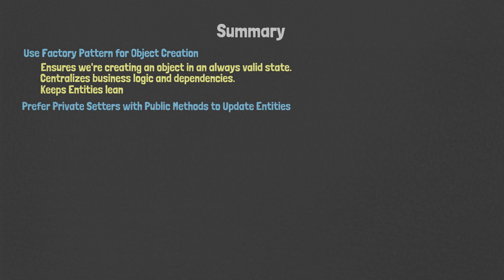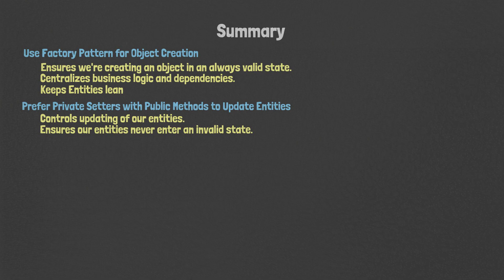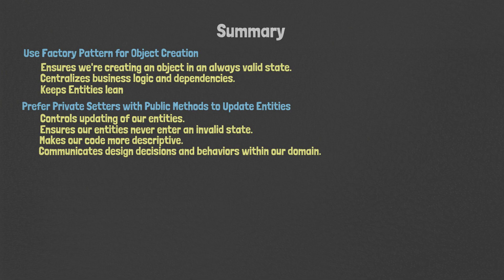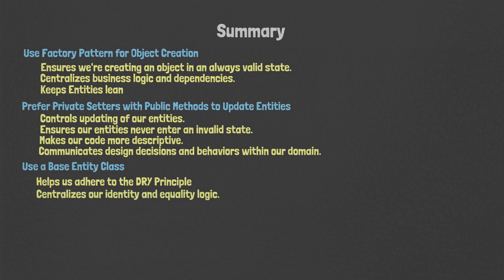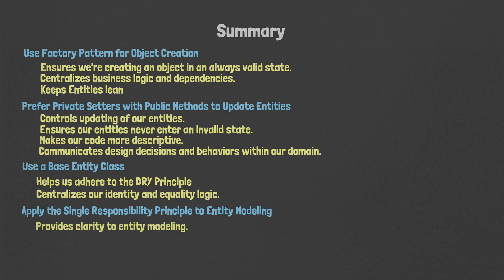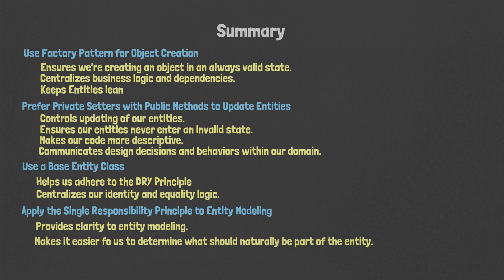Prefer private setters with public methods to update entities. This allows us to control the updating of our entities and enforce our business logic to ensure our entities never enter an invalid state. It makes our code more descriptive and communicates design decisions and behavior within our domain. Use a base entity class to adhere to the DRY principle and handle identity logic in one place. Apply the single responsibility principle to entity modeling to provide clarity, making it easier to determine what should be part of the entity and what should be put elsewhere, and making entities easier to explain, understand, and implement.